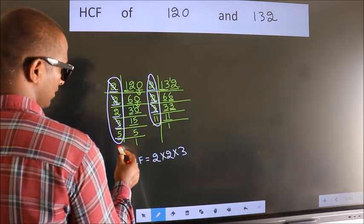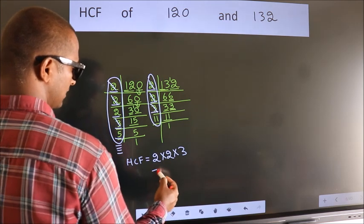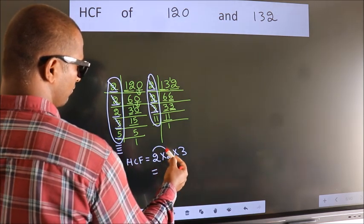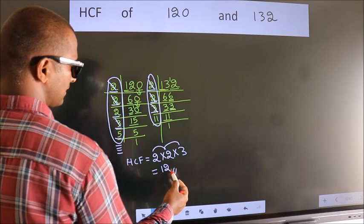No more numbers have been left out. So our HCF is 2 into 2, 4 into 3, 12 is our HCF. Here we go.